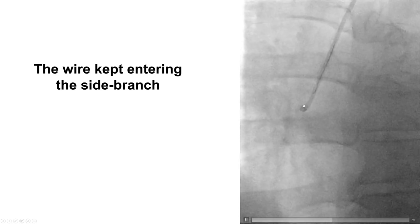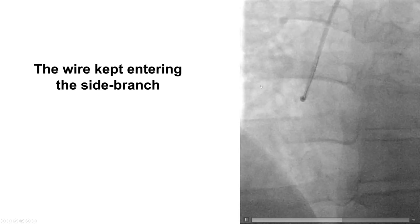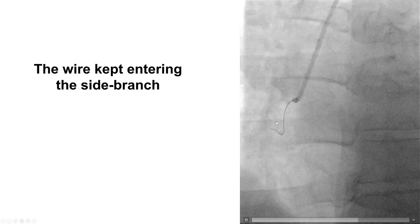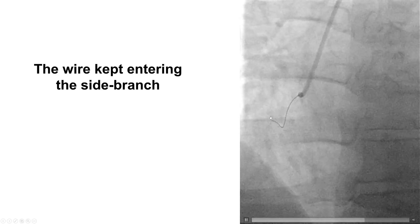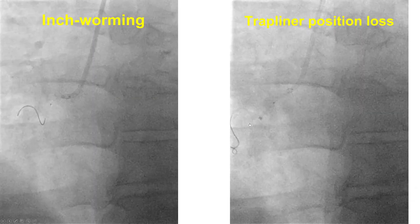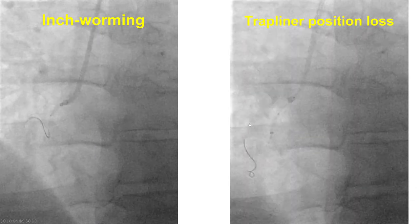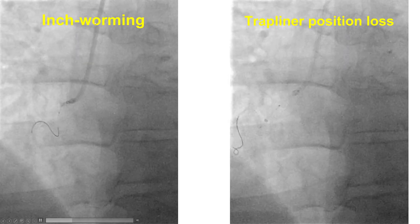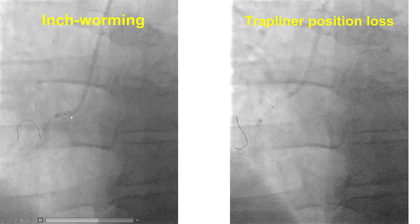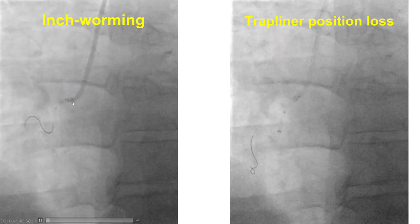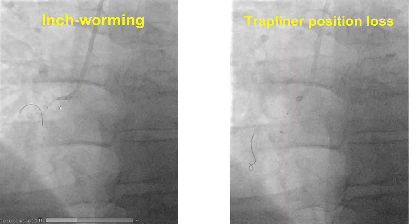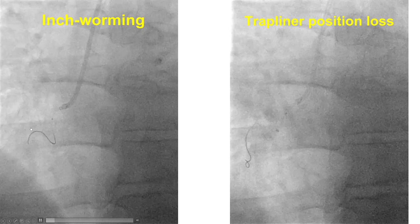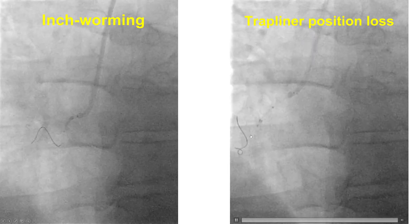We also had difficulty wiring. Engagement was not perfect and the wire kept entering the marginal branch. But eventually, by moving the guide catheter and redirecting the guide wire, we were able to advance it into the proximal right coronary artery. Knowing that support was going to be poor, we tried to reinsert the Trapliner using the inchworm technique. This was very challenging and took several attempts, but eventually we were able to inflate the balloon partially in and out of the guide extension, deflate the balloon, and the Trapliner did go down into the right coronary artery, providing strong support.